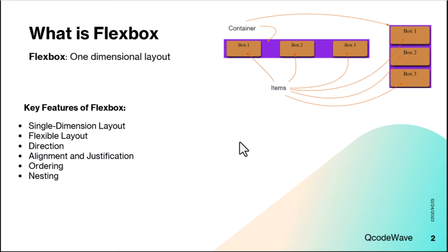Flexbox, short for Flexible Box Layout, is a layout model in CSS that provides an efficient way to distribute and align items within a container, even when their size is unknown or dynamic. Flexbox is primarily a one-dimensional layout model — it deals with layout in either row or column, but not both simultaneously.